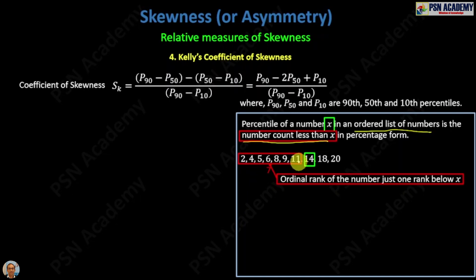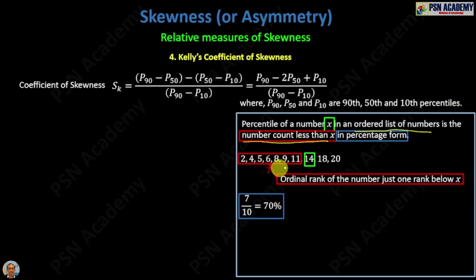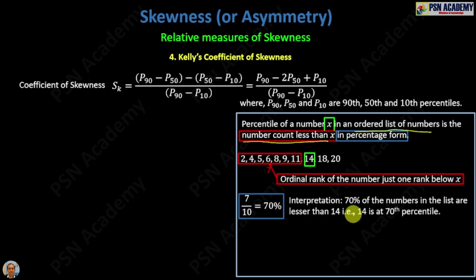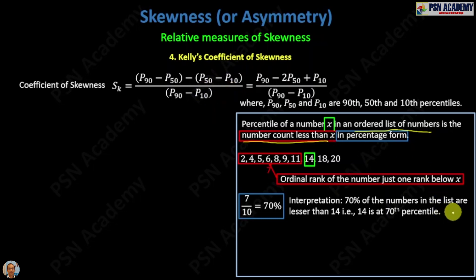Next, you convert 7 to percentage form: 7 divided by 10 multiplied by 100 gives you 70%, since there are 10 total numbers. So 70% of the numbers in the list are less than 14, meaning 14 is at the 70th percentile. In notation, this is written as PE suffix 70.